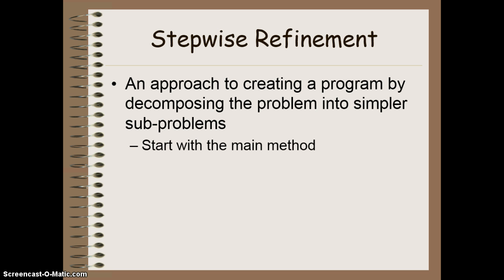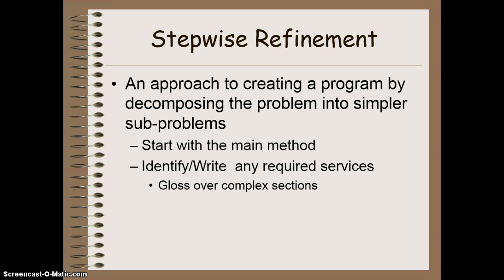To do this, you start by creating your main method as you normally would. Within that main method, you start to identify and write any required services you might need to make that main method work. When you get to complex sections where you're not sure how to approach something, you gloss over it and say 'write a method that does this here.' You then identify that service or method and write code to do it. Any complicated sections in that helper service can be broken down further, and so on, until you end up with very short, small, concise helper services that can be put together to build your main program.